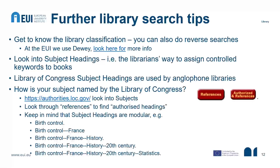Further library search tips — get to know the library classification. Whether in our library or another, if you know where to find your topics in the classification system and the letters that mark the books you're looking at, then going to the shelf you might find more than you find in the catalogue. It's always a good thing to browse the shelves physically, and you can also do reverse searches.